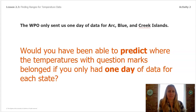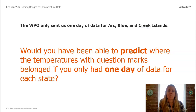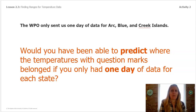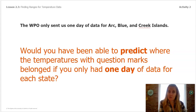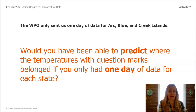Let's think back to earlier lessons. The WPO only sent us data for one day for Blue Island, Arc Island, and Creek Islands. Would you have been able to predict where the temperatures with the question marks belonged if you only had one day of data for each state? I think that would have been very hard. In order to make predictions, we need to find a pattern, and it takes several days of data, at least, to figure out a pattern.